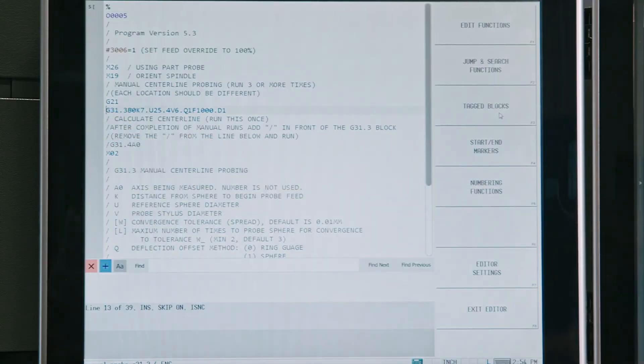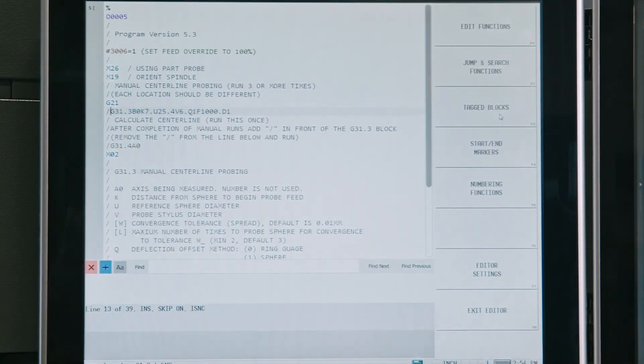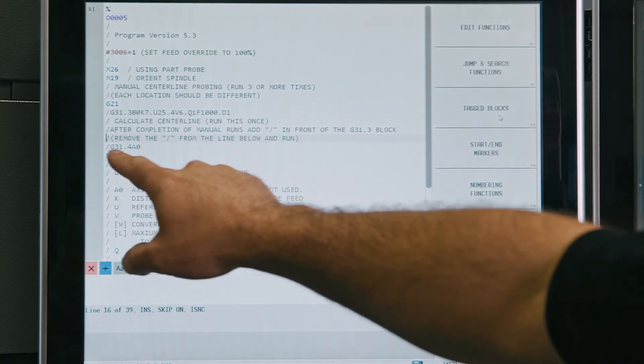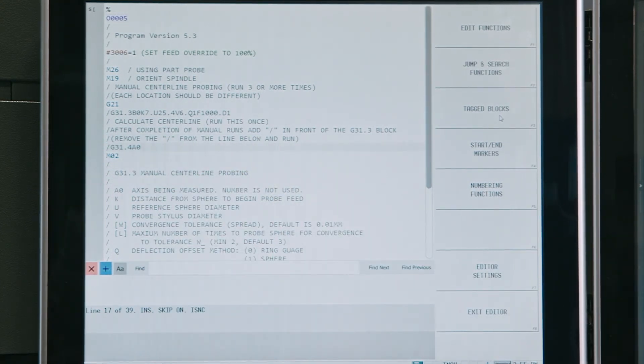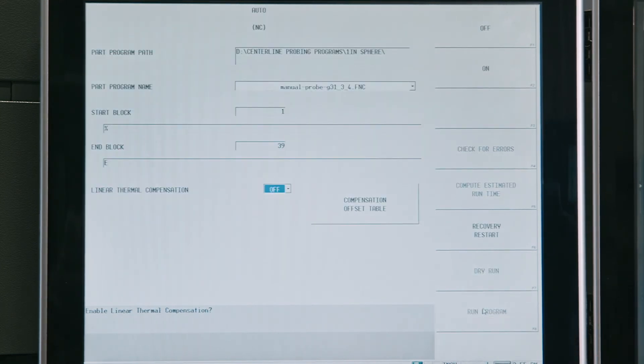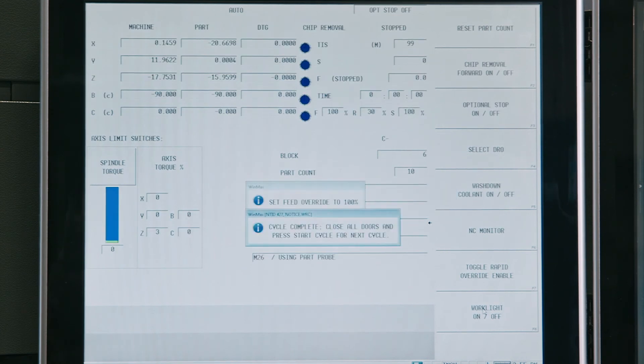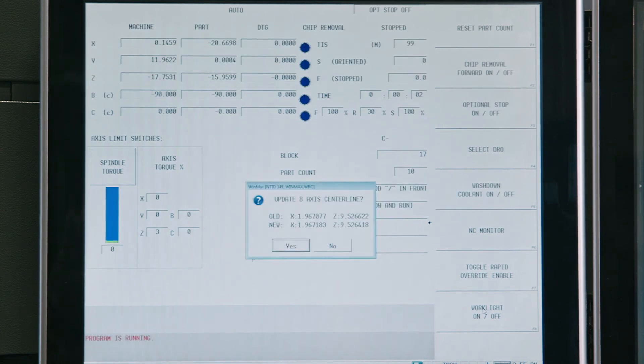Next, we edit the program to add a block skip to G31-3 and remove the block skip from G31-4. Make sure the letter in line 11 matches the axis we have measured. Run the program a final time. The machine will not move. Just accept the changes and the center line is set.